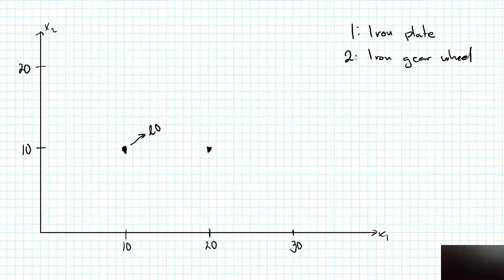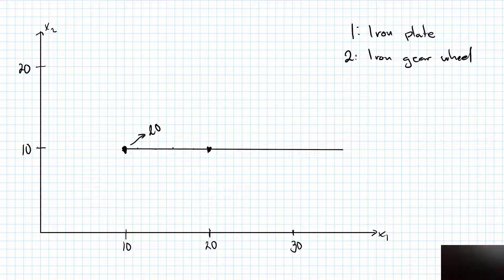That would mean that I am indifferent between these two bundles. You will also be indifferent between any bundle on a straight line between these two points and the one we started with, simply because any such bundle will produce twenty transport belts and no more, and you're left with additional iron plates. So this line will be part of the indifference curve for my initial ten comma ten bundle.